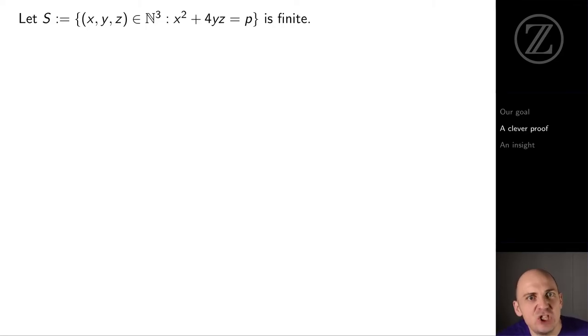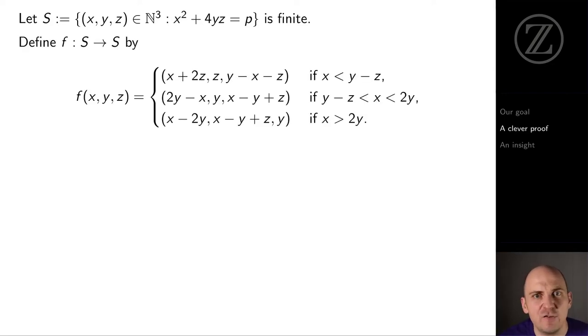How does it go? Well, we'll define a set S consisting of triples x, y, and z of natural numbers with the property that x squared plus 4yz equals p. Now, we know that that set S is finite. I mean, in particular, x, y, and z all must be smaller than p. Then we define a function f from S to itself given by an extremely complicated rule, like when x is less than y minus z, then f(x, y, z) equals (x plus 2z, z, y minus x minus z), and so on.